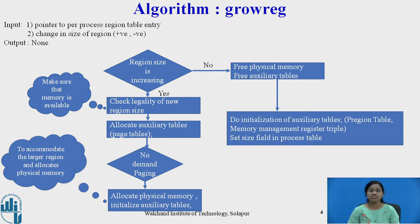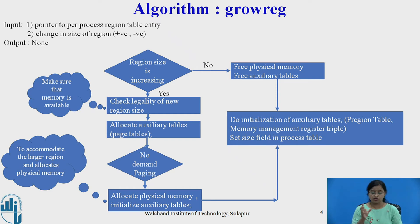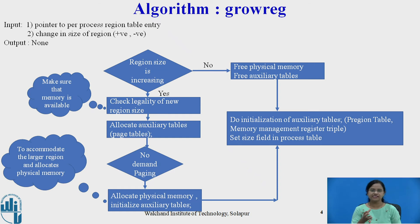After that, the kernel initializes all the auxiliary tables — the per-region table and memory management register triple — and sets the size field in the process table. Whether the region is expanding or contracting, finally it must initialize all auxiliary tables and set the final size of the process. For example, if the initial size is 7 MB and it increases by 1 MB, then 8 MB is stored; if the process decreases from 7 MB to 5 or 6 MB, that final size is set in the process table. This is the grow region algorithm.